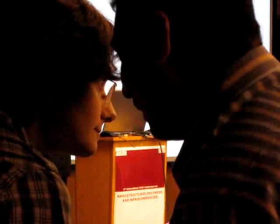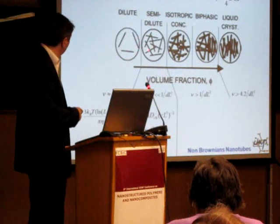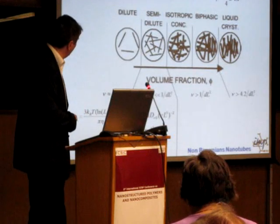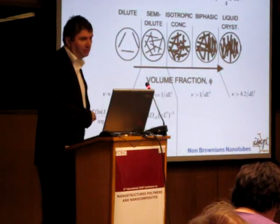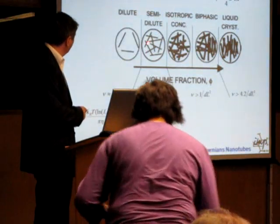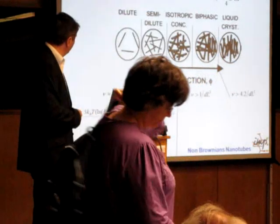If you increase the concentration you will have the transition between the dilute and the semi-dilute regime. And in this concentration you have some contacts between nanotubes. So the rotary diffusion will be slowed down due to this contact between the nanotubes.